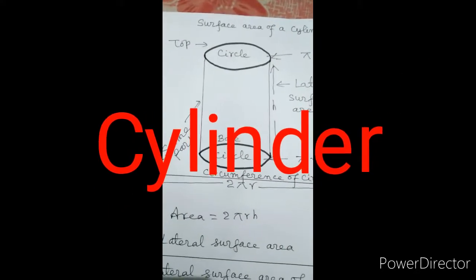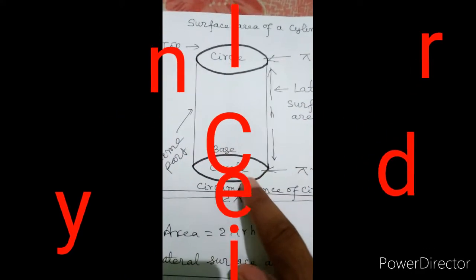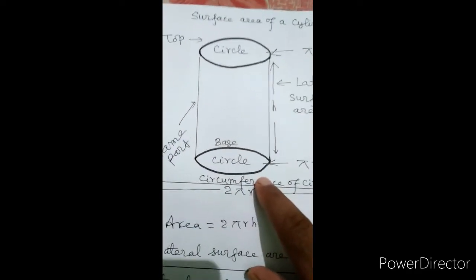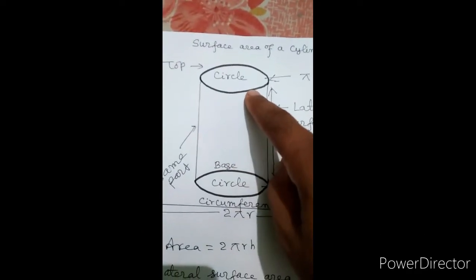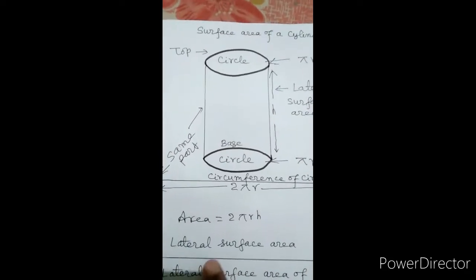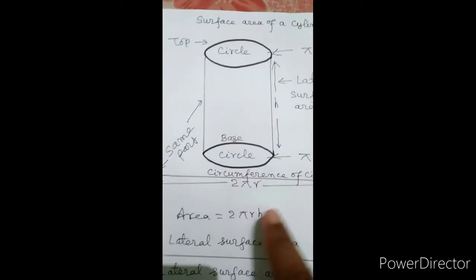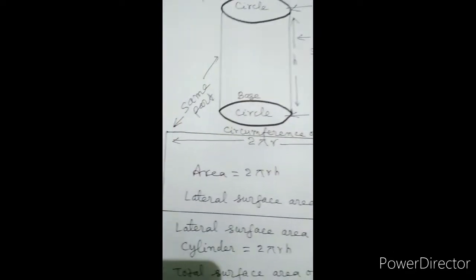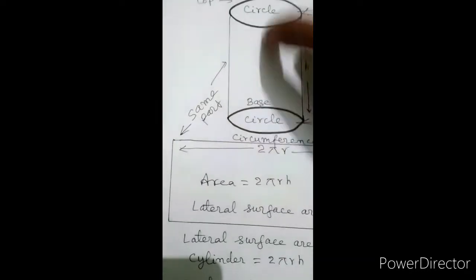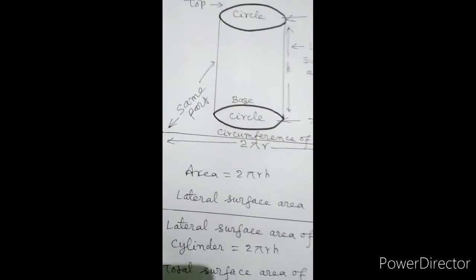Now, come to the surface area of a cylinder. A cylinder has two circular parts — one is the base and the other is its top. The area of its base is πr² as it is a circle, and the area of its top part is also πr². There is also a curved surface area, or lateral surface area. When we cut it and spread it, we get a rectangle.